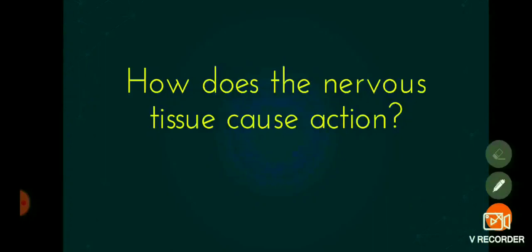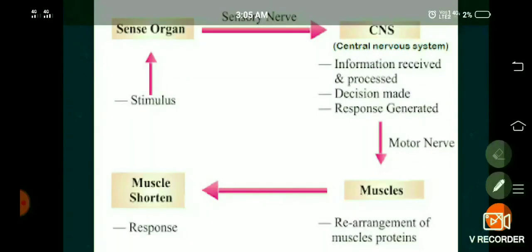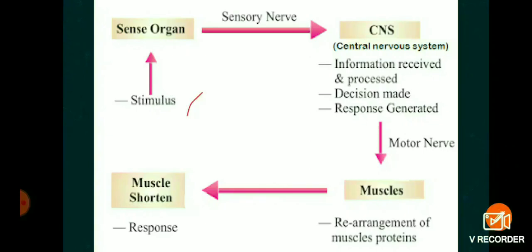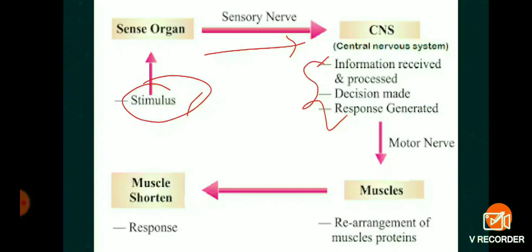The final message is sent to the muscle, and the muscle receives the final message and works accordingly. When the sense organ receives information from the stimulus, the impulse is sent to the central nervous system — the spinal cord or brain. There, information is received, a decision is made, and as a result a response is generated in the form of signals sent to the motor nerve. The nerve endings of motor nerves are in contact with muscle fibers.